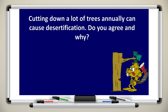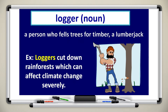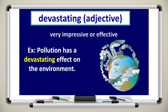I agree — when loggers cut down trees, that causes deforestation, which leads to devastating dry lands and desertification. Loggers are people who fell trees. For example, loggers cut down rainforests, which can severely affect climate change. 'Devastating' means very impressive or destructive in effect — for example, pollution has a devastating effect on the environment.